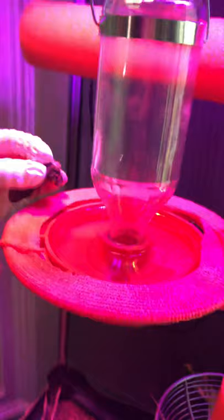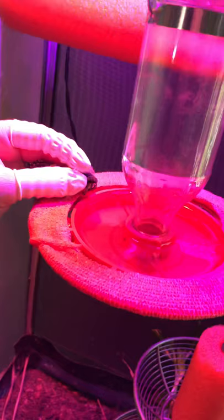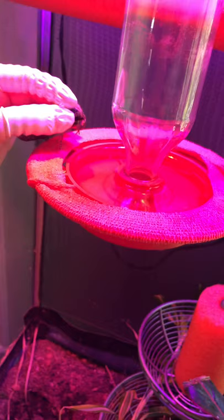Sometimes their proboscis gets stuck in their arms, so you have to be careful. But that's it in a nutshell. Sometimes you have to help them along, and you have to know if they're drinking or not.